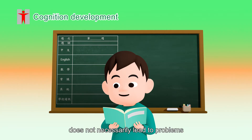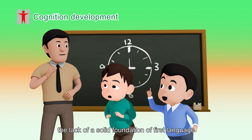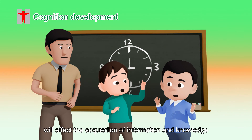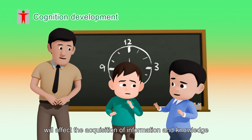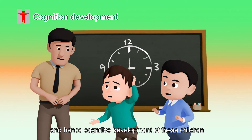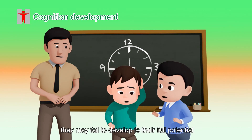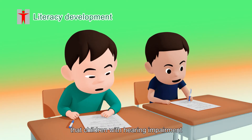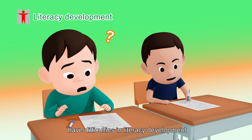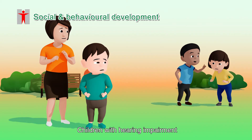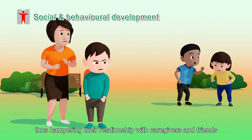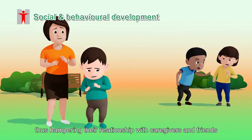Hearing impairment does not necessarily lead to problems in cognitive development. However, the lack of a solid foundation of first language and interactive learning experience will affect the acquisition of information and knowledge, and hence cognitive development of these children. As a result, they may fail to develop to their full potential. Many studies have also shown that children with hearing impairment have difficulties in literacy development. Children with hearing impairment may limit their communication and interactions with others, thus hampering their relationship with caregivers and friends.